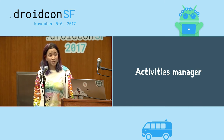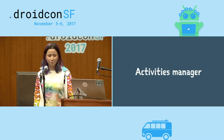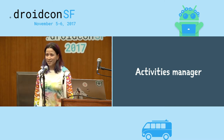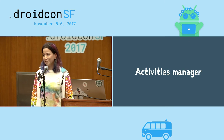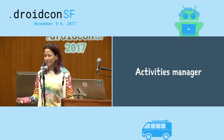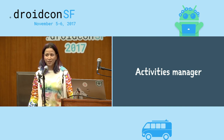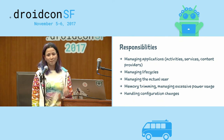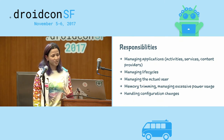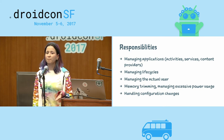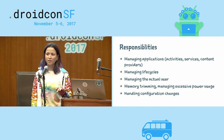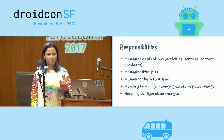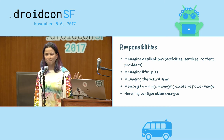The activity manager is probably the most important component. It manages our activities — and by activities I also mean services, broadcast receivers, everything. It manages the application lifecycle: which app is resumed, which is paused, which is stopped. It also manages the actual user — whoever is using the phone right now.